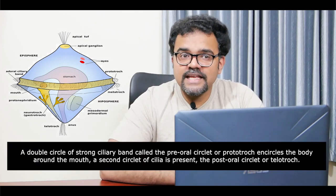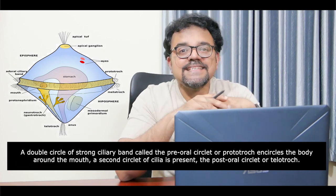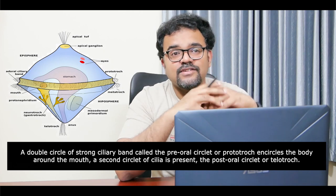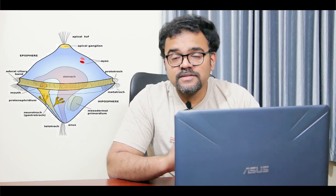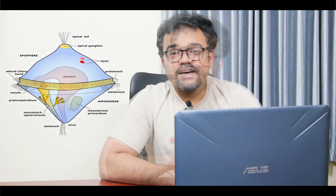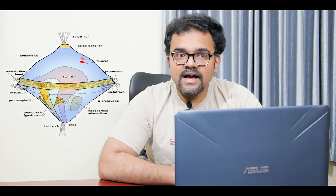A double circle of strong ciliary bands called the pre-oral circle or prototroch encircles the body around the mouth, and a second circlet of cilia called the post-oral circlet or telotroch is also present. In the trochophore larva, the excretory organs are paired nephridia. The trochophore exhibits no metamerism, and the rudiment of the future adult trunk can be seen as a small region at the posterior pole. The upper pole possesses an apical sensory plate with a tuft of long apical cilia, and the lower pole has an anal tuft of cilia. The free-swimming larva feeds on plankton and other microorganisms and ultimately metamorphoses into the adult.